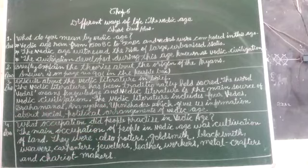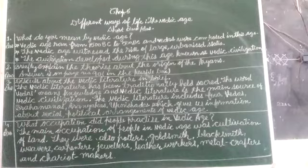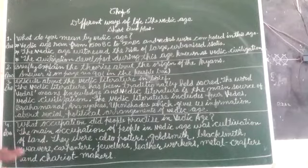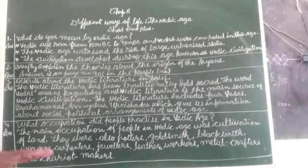Question number 4: What occupation did people practice in the Vedic Age? The main occupation of people in the Vedic Age was cultivation of land. They were also potters, goldsmiths, blacksmiths, weavers, carpenters, jewelers, leather workers, metal crafters, and chariot makers.